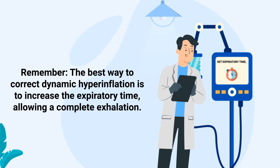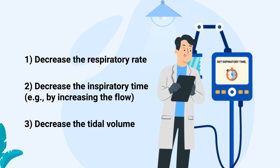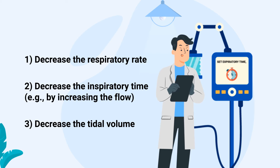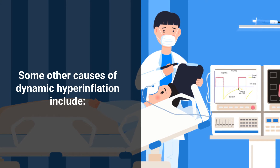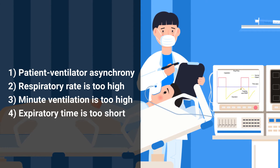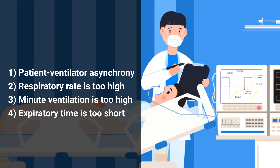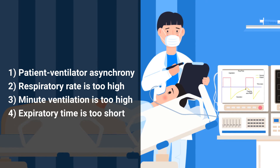The best way to correct dynamic hyperinflation is to increase the expiratory time, allowing complete exhalation. You can do that by decreasing the respiratory rate, decreasing the inspiratory time — which can be done by increasing the flow — and by decreasing the tidal volume. Other causes include patient-ventilator asynchrony, a respiratory rate that is too high, a minute ventilation that is too high, and an expiratory time that is not long enough.